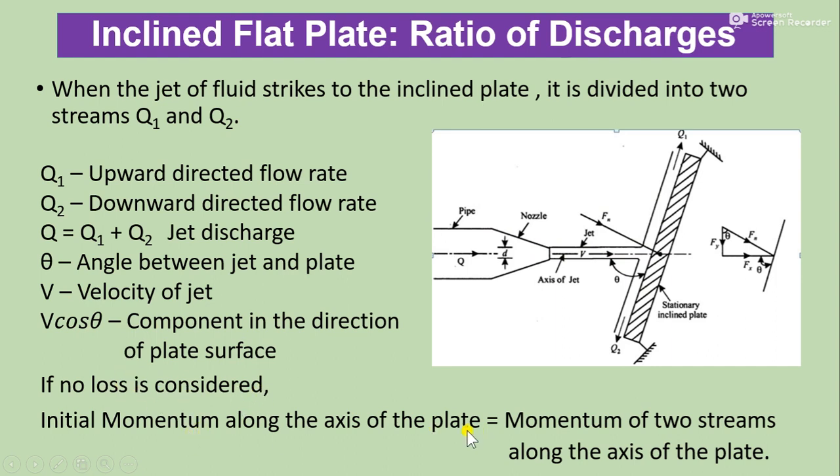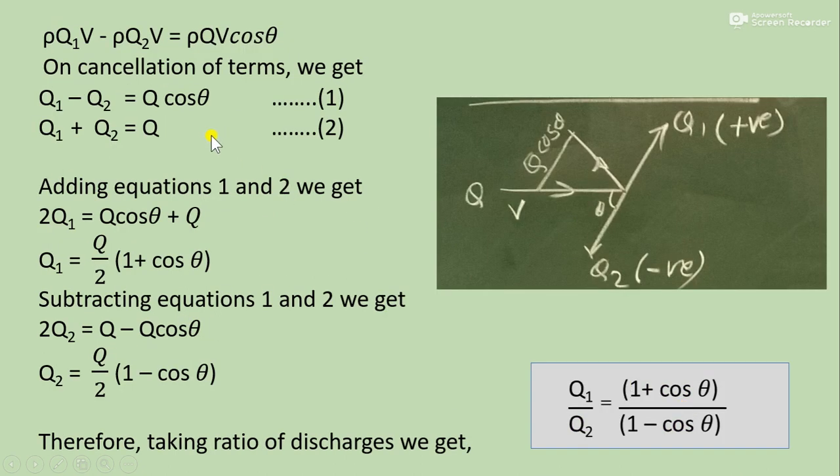So here momentum is mass times velocity. Mass is ρ times Q. So initial, that is ρQ1V, and after striking, ρQ2V.